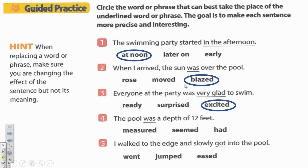Number four: 'The pool was a depth of 12 feet.' Should we use 'measured,' 'seamed,' or 'had'? Which one is better? 'The pool measured a depth of 12 feet.' Right.